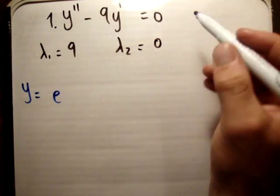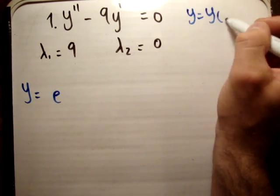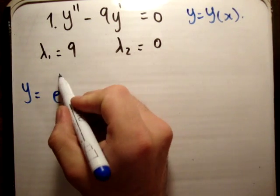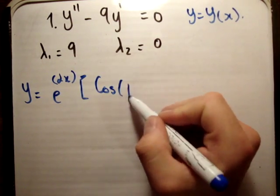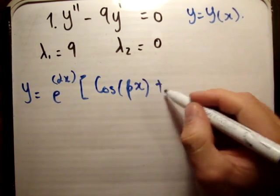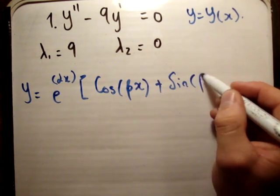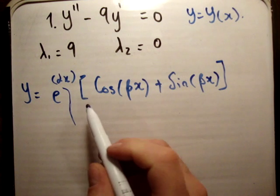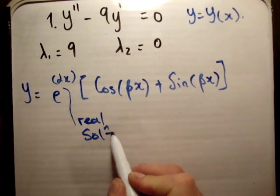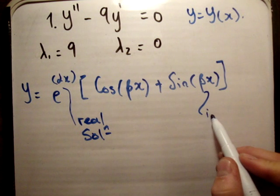y is equal to y of x, just as a matter of interest. So it's going to be e to the alpha x, outside of the cos of beta x, plus the sine of beta x. And I said in the past as well, that alpha was the real solution, and that beta was the imaginary.